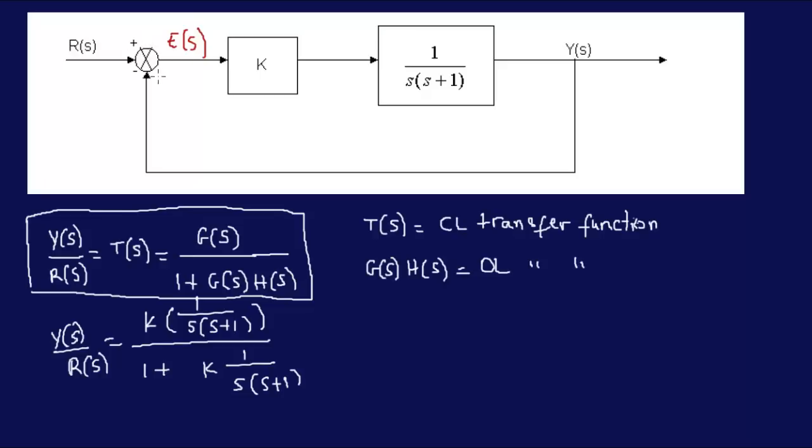So, there's a summation over here. So, E of S is equal to R of S coming in minus Y of S. R of S minus Y of S. If we had a plus sign over here, then it would be plus, of course. So, what's Y of S? Y of S is a straight path. It's the forward path. Y of S is K times that.